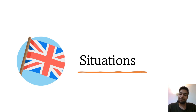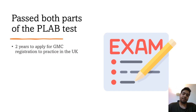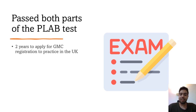There are some situations you may face if you've already passed one part of PLAB when the UK MLA gets rolled out. The first situation: if you have passed both parts of the PLAB test, you have two years to apply for GMC registration to practice in the UK and will not have to go for any part of the UK MLA.